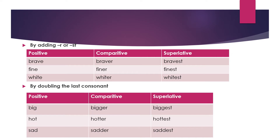By adding '-r' or '-st': adjectives which are already ending with 'e' — we do not add one more 'e'; we simply add '-r' or '-st'. For example, 'brave' is already ending with the letter 'e', so we do not add another 'e': brave, braver, bravest. Similarly, 'fine' ends in 'e', so: fine, finer, finest. And: white, whiter, whitest.